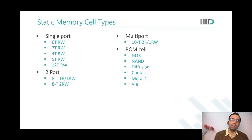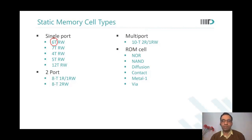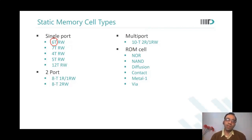All of us have heard about 6T SRAM cells. So 6T — what does RW stand for? Read, write. Yes. This is a single port memory in which you can do both read and write.